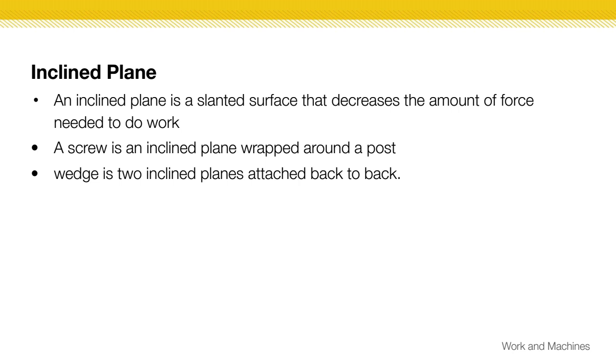A screw is a type of inclined plane that wraps around a post, but think of it as like a slant. You could think of it as like a ramp that's twisted around that post. A wedge, like a doorstop, or it could be two different sides attached back to back. If you're a skater, you're probably more familiar with that.